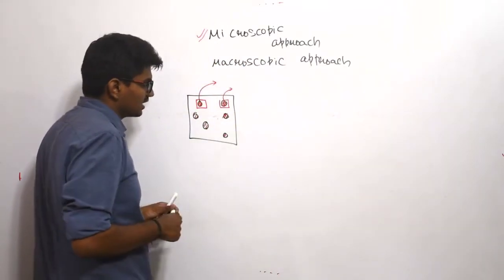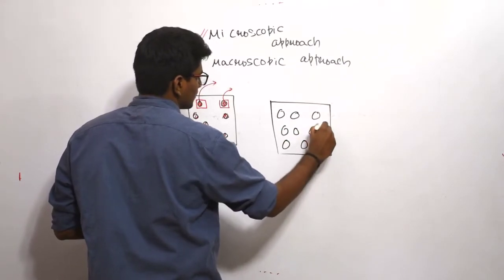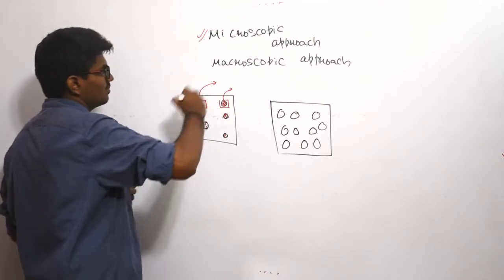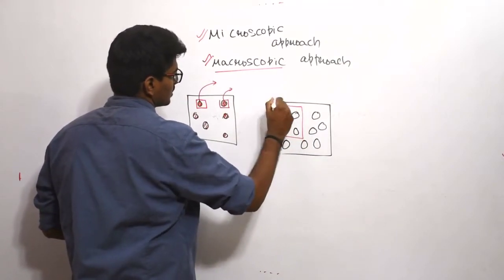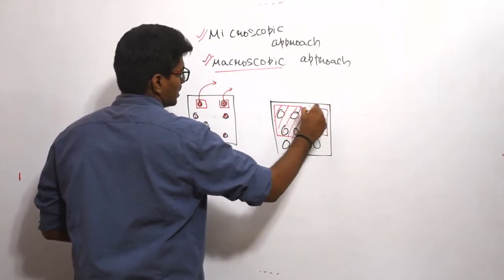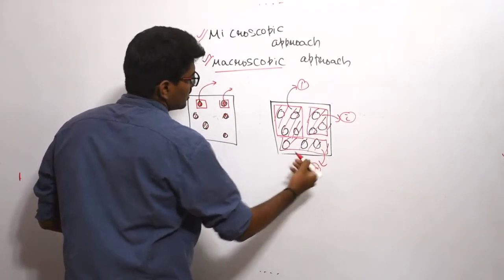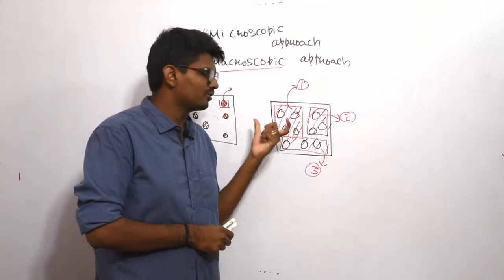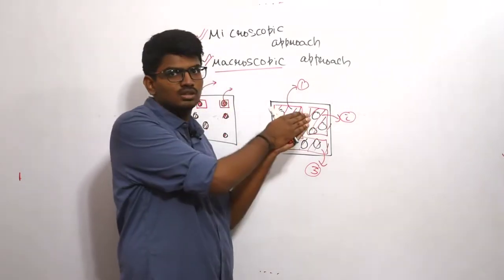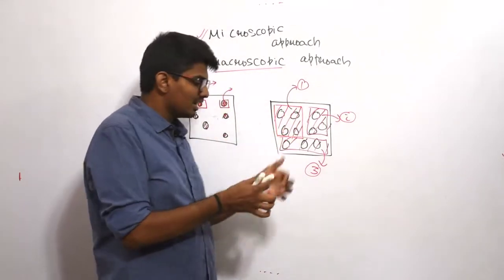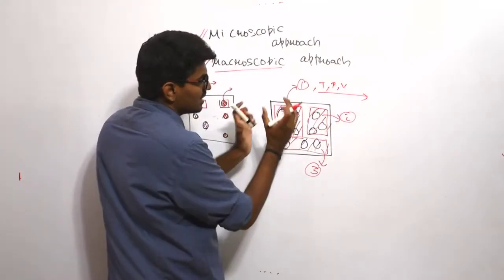In the case of the macroscopic approach, consider the same container which has some gas. In macroscopic approach, we will not concentrate on each and every molecule. Instead, we will choose some particular section — a first section, second section, third section. In that section there will be a number of molecules — 4, 5, 10, 15 — and now we will study the average behavior of all the molecules in that section. We will be finding temperature, pressure, volume — all the properties for the complete section or space chosen.